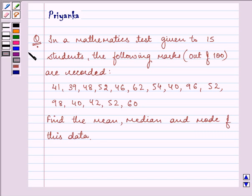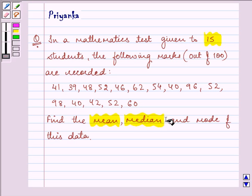Hi and how are you all today? The question says in a mathematics test given to 15 students, the following marks are recorded. These are the marks of the students which are given to us. In this question we need to find the mean, median and mode of this data.